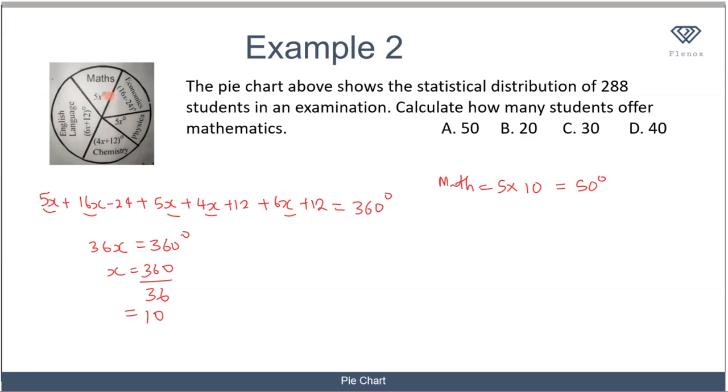The number of students that take mathematics equals the degree for mathematics (50) over the total degrees (360), times the total number of students (288). When you compute this, you get 40. So the total number of students that offer mathematics is 40, and the correct option is option D.